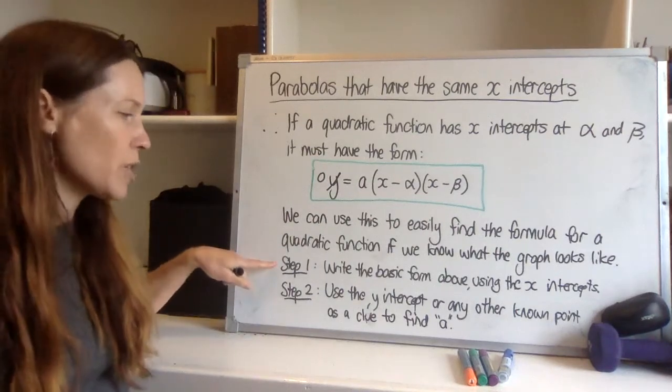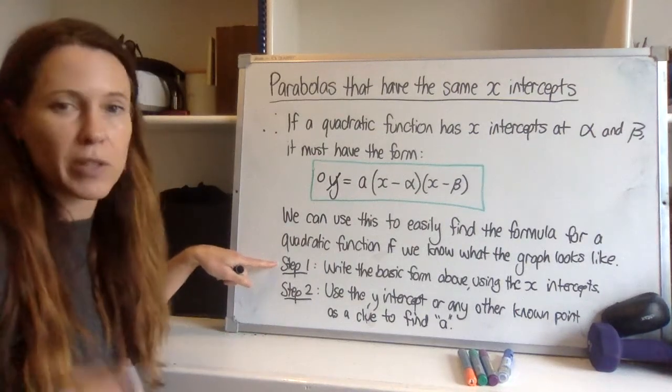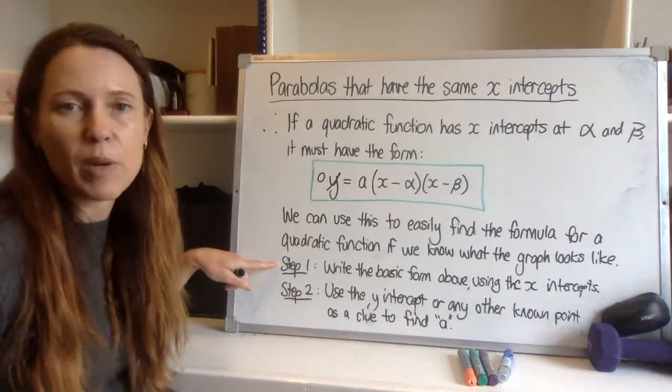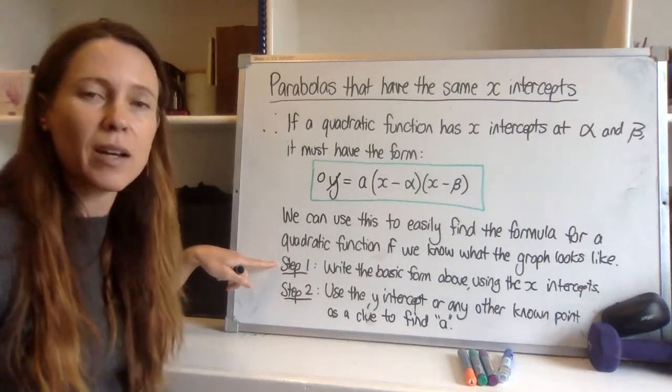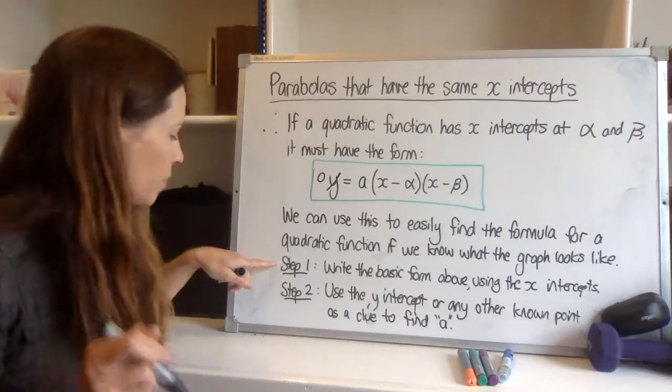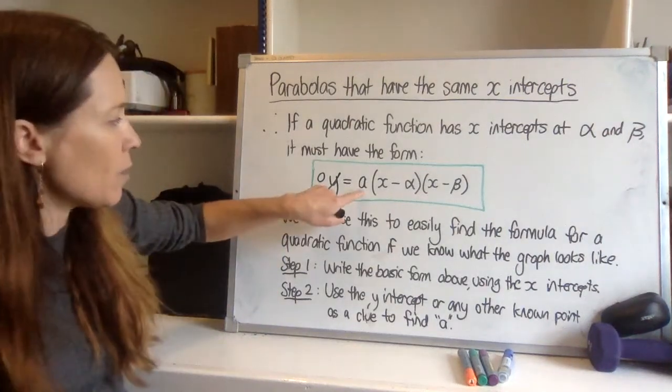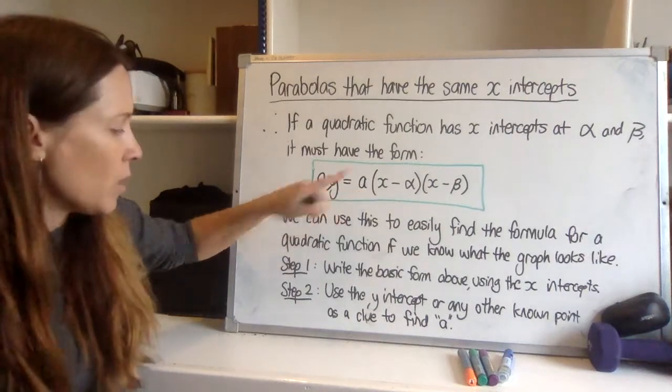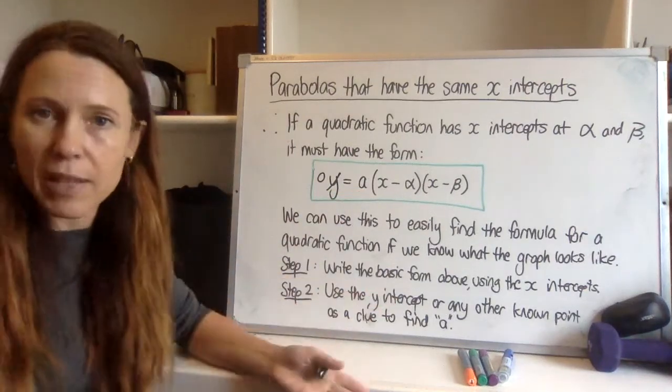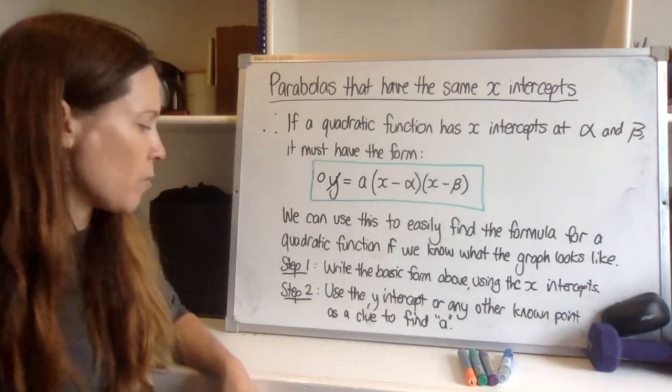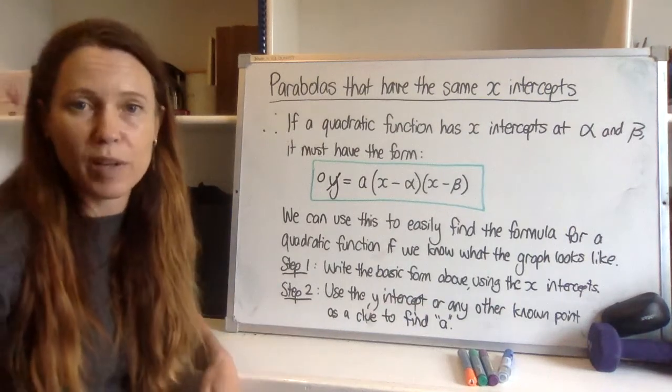Now two steps. First step is write the basic form above using the x-intercepts. Now you might have been told what the x-intercepts are or you might be looking at the graph and they're already labelled. Step two, you're going to need a clue of some kind so that you can nail down what this a is. So use the y-intercept if that's given to you or any other known point as a clue to find a.